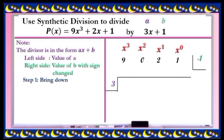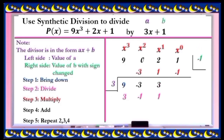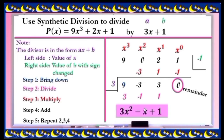Step 1: bring down the numerical coefficient, which is 9. Step 2: divide — 9 divided by 3 is 3. Step 3: multiply — 3 times negative 1 equals negative 3. Next, add: 0 plus negative 3 is negative 3. Repeat from step 2: negative 3 divided by 3 is negative 1; negative 1 times negative 1 is positive 1; positive 2 plus positive 1 is positive 3. Again: 3 divided by 3 is 1; 1 times negative 1 is negative 1; and 1 plus negative 1 is 0. The remainder is 0, so the final answer is 3x² - x + 1.